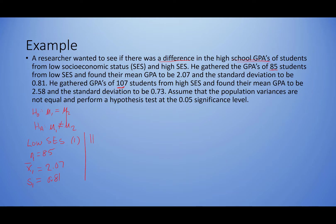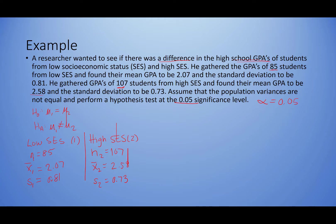High SES will be group two. So n₂ = 107, sample mean x̄₂ = 2.58, and sample standard deviation s₂ = 0.73. Our significance level is α = 0.05.